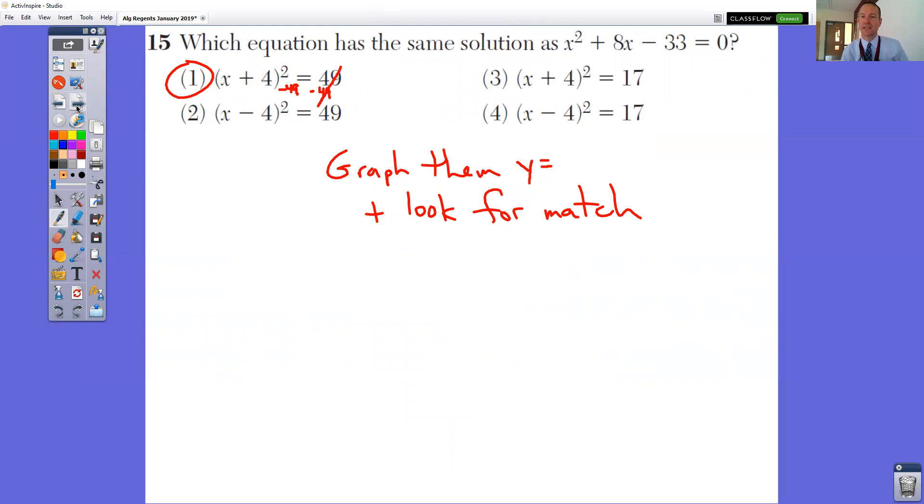So in question number 15, which equation has the same solution as this? I would just graph them and see which one matches. Now be careful. When you go and graph them to see which one matches, they have to equal 0. So if we started with answer number 1, you'd get lucky, because you have to subtract 49 from both sides. So you'd really be typing in the equation y equals x plus 4 squared minus 49, because you need it to equal 0. So we need to subtract 49 from both sides. If you were going to try number 3, you'd have to subtract 17 from both sides, because we need it set equal to 0. Just graph it and see which one matches the solution.